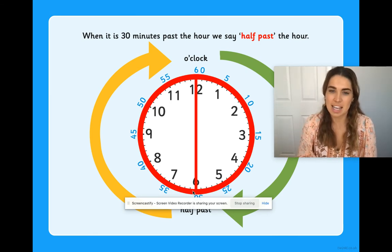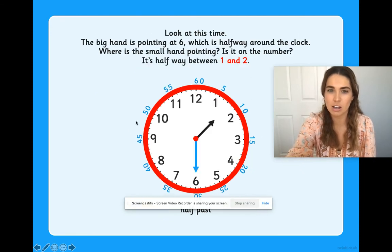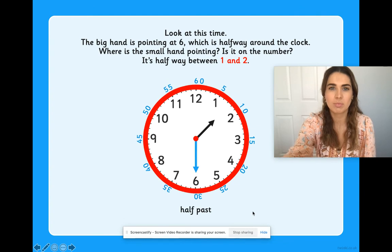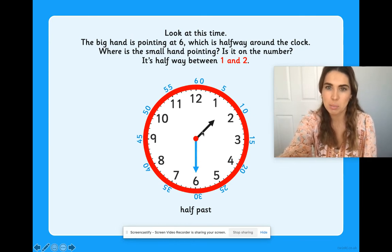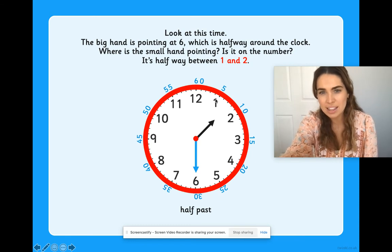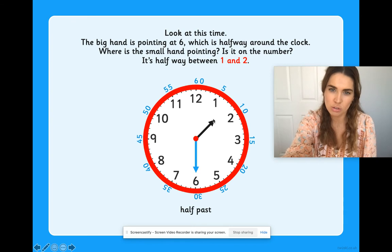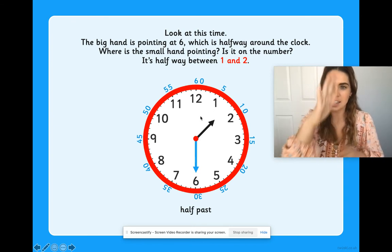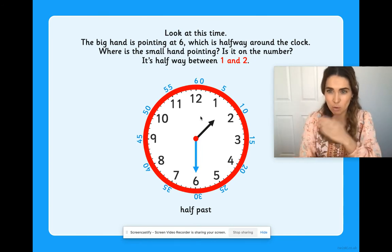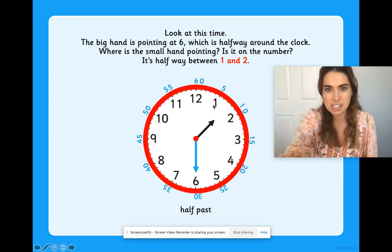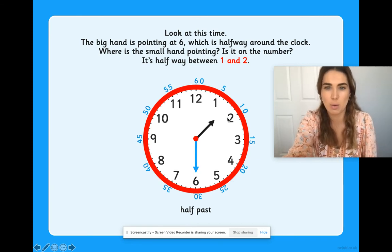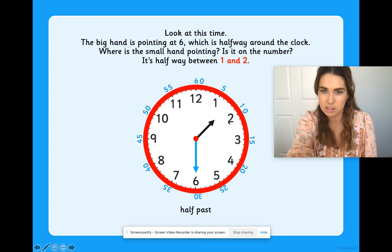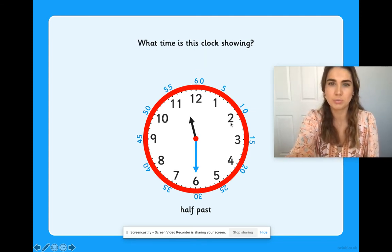When it is 30 minutes past the hour, we call that half past because it's half the clock. Look at this time. The big hand is pointing at the six, which is halfway around the clock. Where is the small hand pointing? Is it on the number or is it in between the numbers? Oh, it's halfway between one and two. That's another clue that we've got half past time. These hands are always spinning. If you watch the clock really closely, you'll see that they're always really slowly moving. So it's not just going to stay on the one for the whole hour. It's slowly going to move between the one and the two over the course of the hour. This short hand moves so slowly. It takes him a whole hour to get from this hour to this hour, from one o'clock to two o'clock.